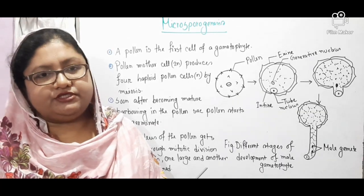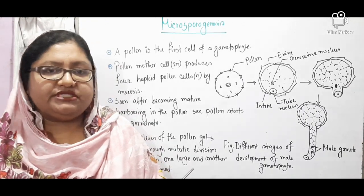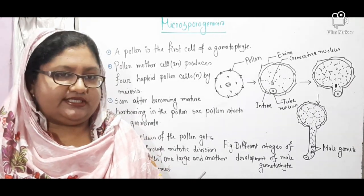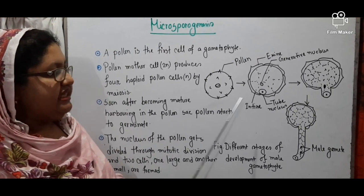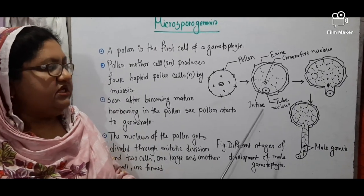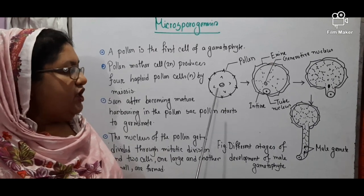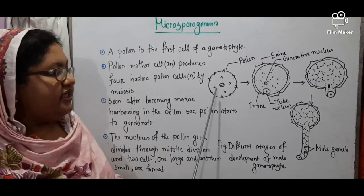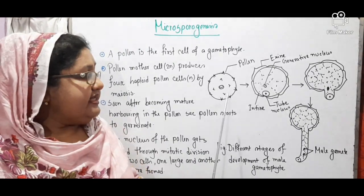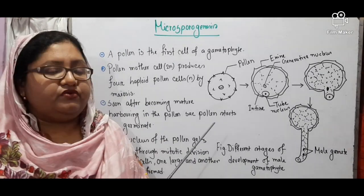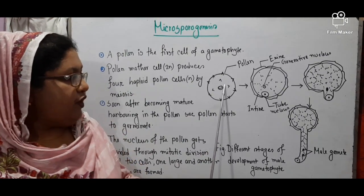Now, Microsporogenesis. What is Microsporogenesis? The process through which male gametes are produced in plants is known as Microsporogenesis. Here are the different stages of Microsporogenesis. You can see that this is the pollen, produced inside the pollen cell. Inside the pollen cell, the pollen mother cell divides through meiosis cell division and produces haploid pollen.